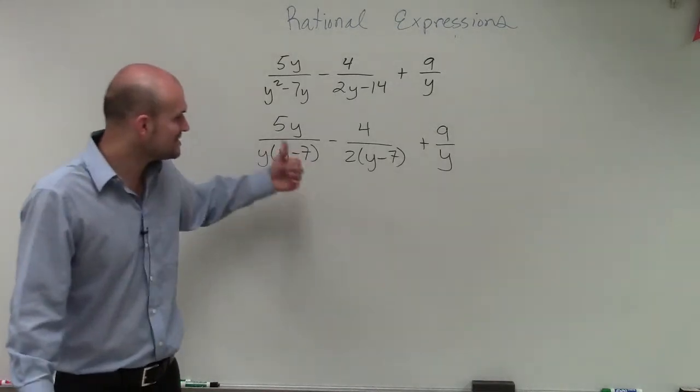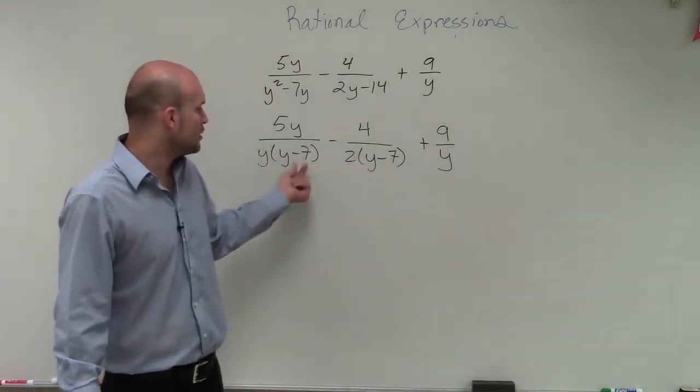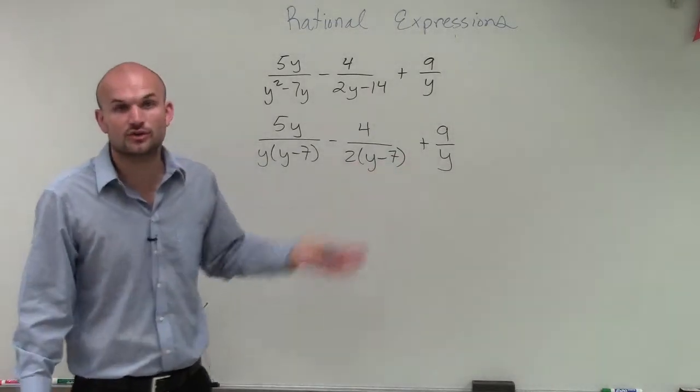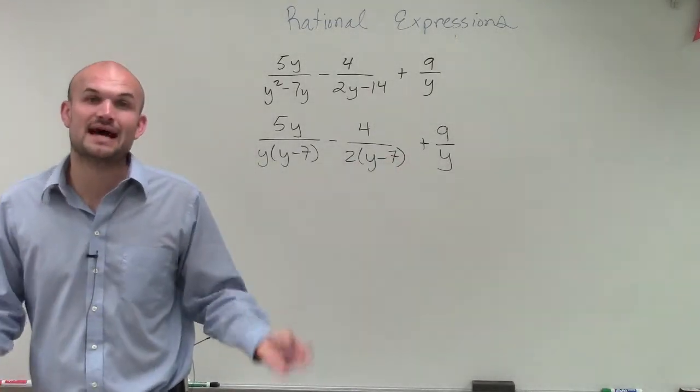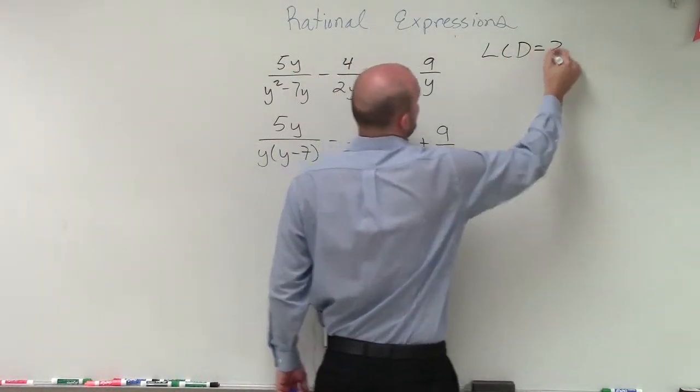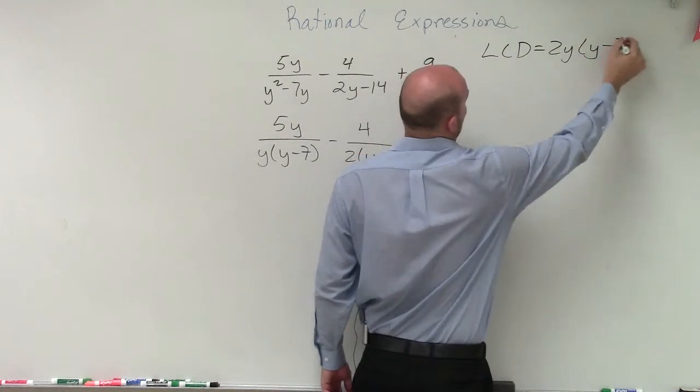So we look at this and we say, my LCD, we can see that two terms share a y minus 7, two terms share a y, and then one term shares a 2. So if I'm going to find the least common denominator that all terms can share, I'll write it over here. The LCD is going to be 2y times y minus 7.